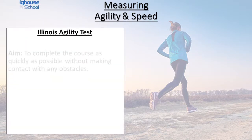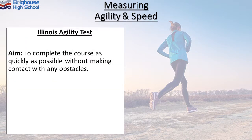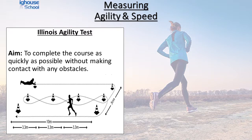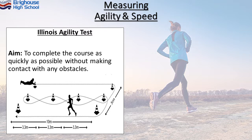Agility is measured using something called the Illinois Agility Test. The idea of this test is that you complete the course as quickly as possible without making contact with any of the obstacles. The obstacles are cones that are laid out, and you have to follow a particular running pattern around these cones and do so within the shortest time possible.